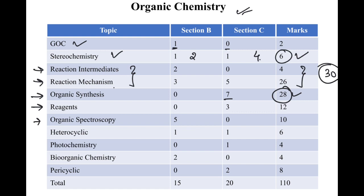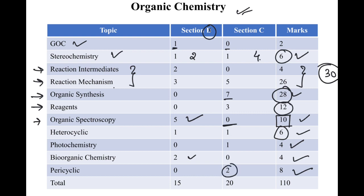For reagents there are 12 marks, and for organic spectroscopy 10 marks — all easy questions, with five questions in Section B and none in Section C. Heterocyclic chemistry gave 6 marks (one question each in B and C). Photochemistry gave 4 marks, bio-organic chemistry 4 marks (two questions of 2 marks each — one was on the isoelectric point of alanine). For pericyclic chemistry, 8 marks from two questions in Section C.